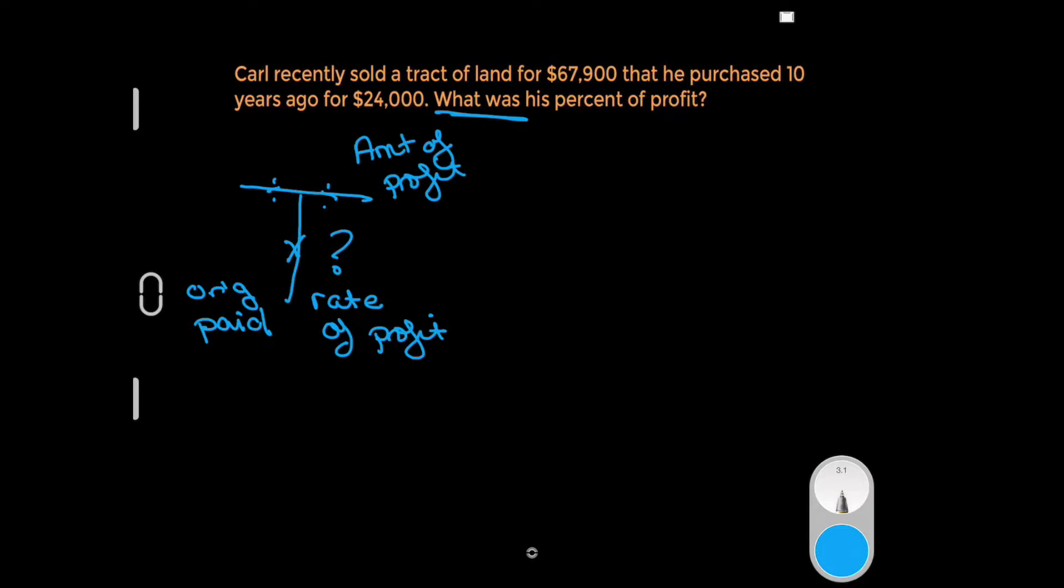So the first number we come to is $67,900. Well, we know that is most definitely not the amount of profit—I wish—and it's not what he originally paid, so we'll just leave that number alone for right now. Ten years ago doesn't go into our T-bar, and then we've got that $24,000. That's what he purchased the property for, so I'm going to put that into the originally paid.